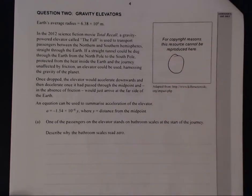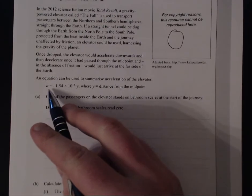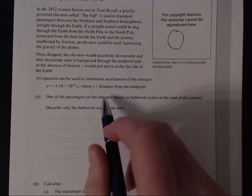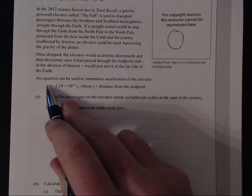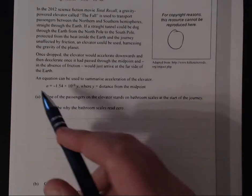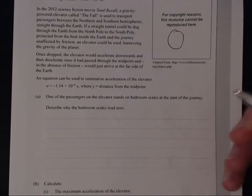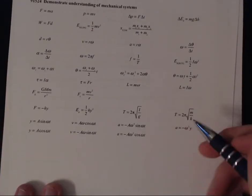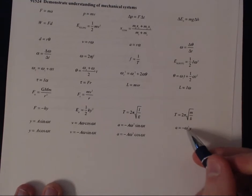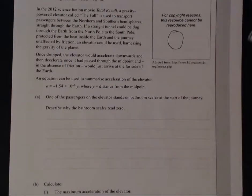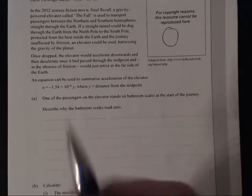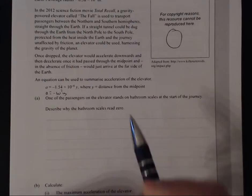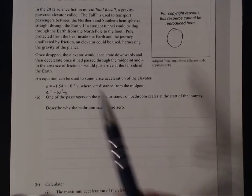It's pretty straightforward. Cracking straight into the question: acceleration is equal to negative 1.54 times 10 to the negative 6, where y is the distance from the midpoint. If we multiply this by mass we get force, and this is a constant times displacement. Going to our formula sheet, we have acceleration equals minus omega squared times displacement — very similar. So we write down: a = minus omega squared times y, and we can see that 1.54 times 10 to the negative 6 is just omega squared.